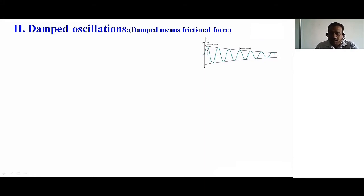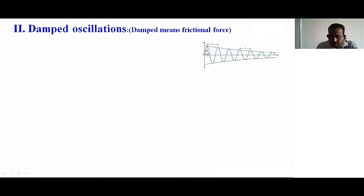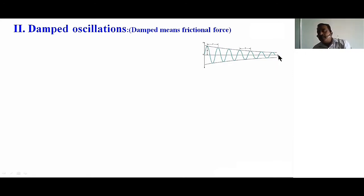On the graph, displacement is on the y-axis and time is on the x-axis. As the time value increases, the displacement value decreases. This maximum displacement is called amplitude, and as the displacement decreases, the amplitude also decreases — sometimes it will reach zero value after some time.